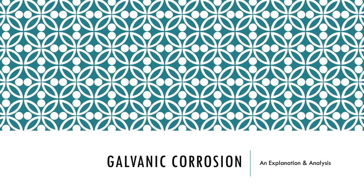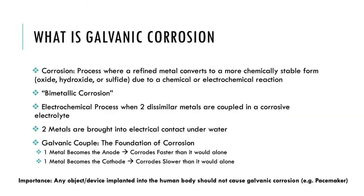First, let's talk about galvanic corrosion. Corrosion is a process where a refined material, such as metal, converts to a more chemically stable form, such as an oxide, hydroxide, or sulfide, due to a chemical or electrochemical reaction.